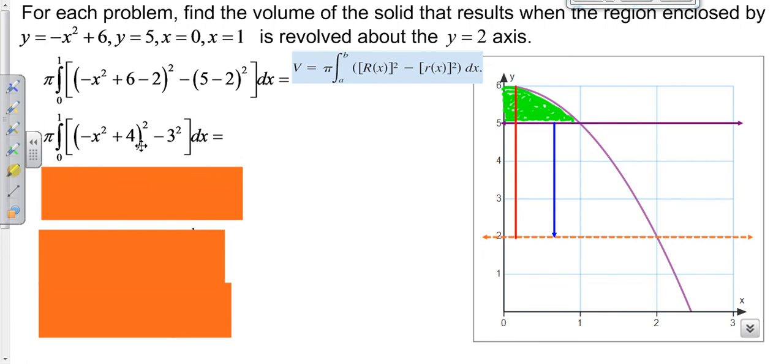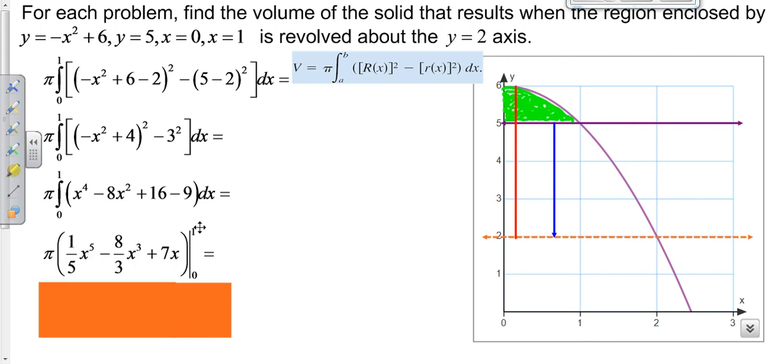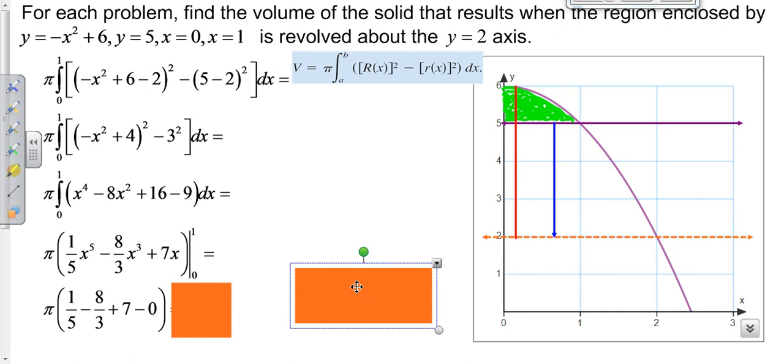Then you just have to FOIL this out, collect like terms. Then you have to go ahead and integrate, increasing your exponent by 1. Then you've got to plug in 1, minus what you get when you plug in 0, which is 0. Then you want to go ahead and work that out, and you get 68 pi over 15.